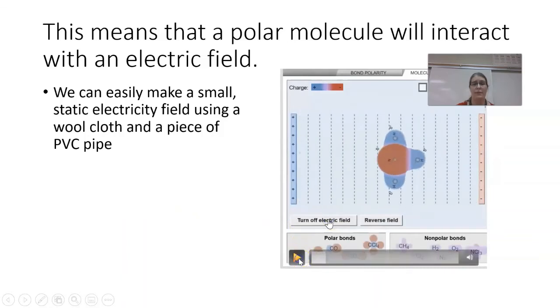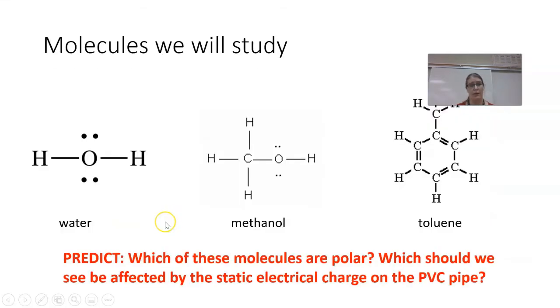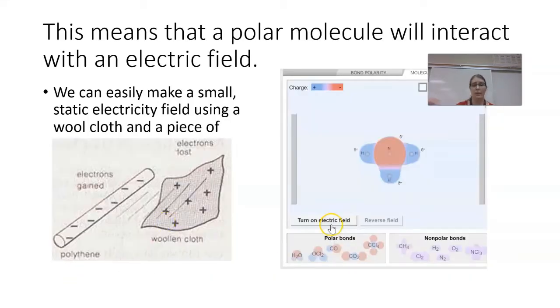So we can then make a small static electrical field using static electricity and a piece of PVC pipe. If you rub a piece of PVC pipe with a cloth, you can rub electrons off of the cloth onto the PVC, or in this case, the diagram says polyethylene, but PVC works the same way. So the PVC gains electrons from a woolen cloth and becomes negatively charged. So I have a static negative charge here that will then be able to interact with a polar molecule.